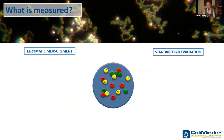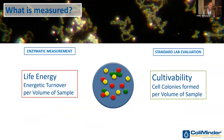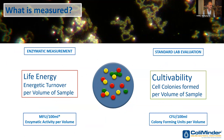To summarize: the standard method is based on cultivability, or cell colonies formed per volume of sample. The enzymatic method is based on life energy, or the energetic turnover of living organisms per volume of sample. So we have CFU on one hand, and enzymatic activity per volume on the other. I'll now open the stage for questions and answers — if anyone wants to post a question into the chat, I'm happy to address it.